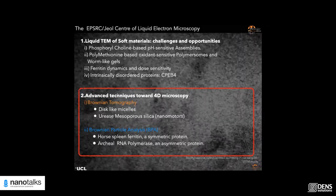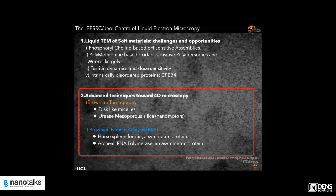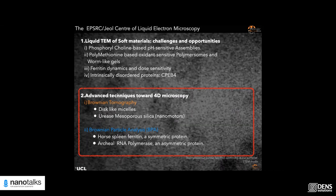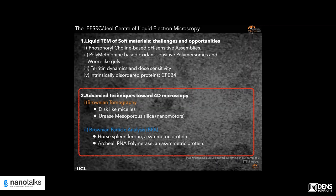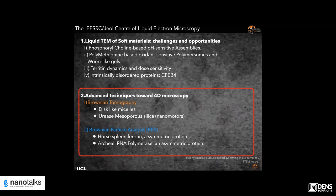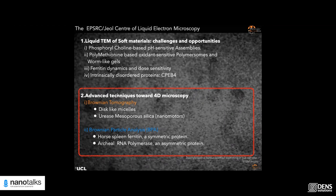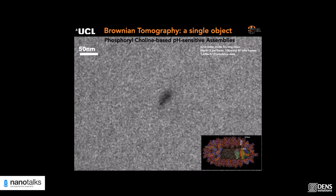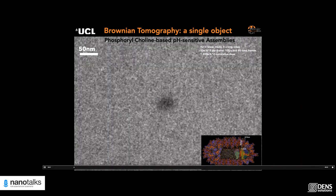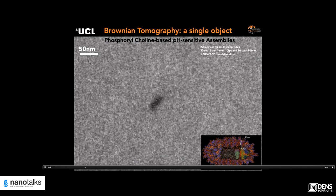With this I conclude the first block of my talk — challenges and opportunities of liquid TEM. Now I'm going to introduce the second part: advanced techniques towards 4D microscopy. The '4D' includes the dimension of time. We want to explore the time concept, and an asymmetric object is the perfect platform for exploring Brownian dynamics and applying our method.